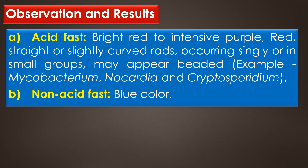Observation and results. Acid-fast bacilli appear as bright red to intensive purple-red, striped or slightly curved rods, occurring singly or in small groups, and may appear beaded. Some examples of acid-fast bacilli are Mycobacterium species, Nocardia species, and Cryptosporidium species. Non-acid-fast bacilli appear in blue color. In addition, the background material should be stained blue.